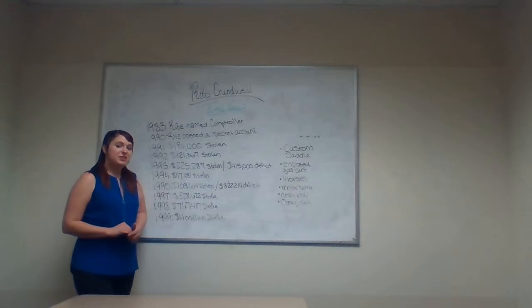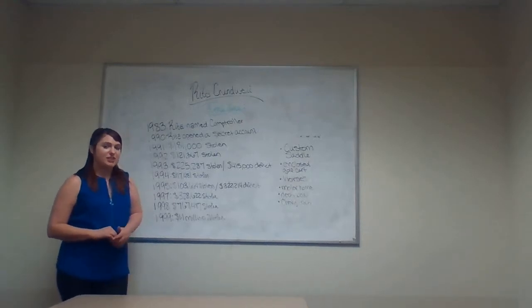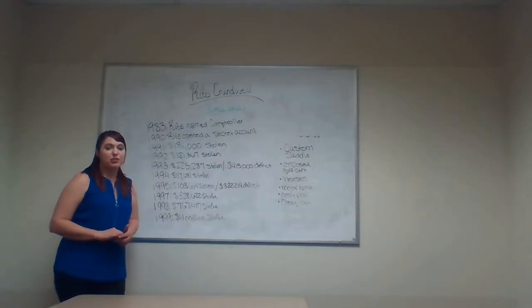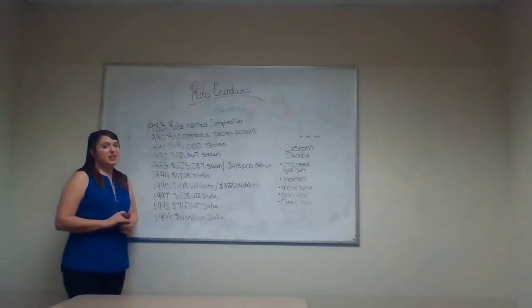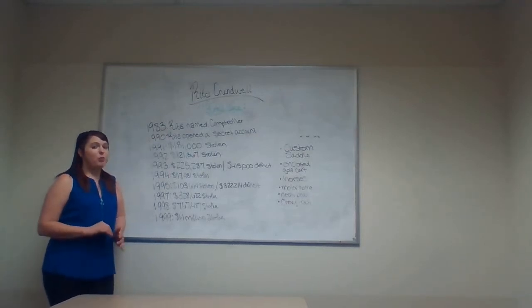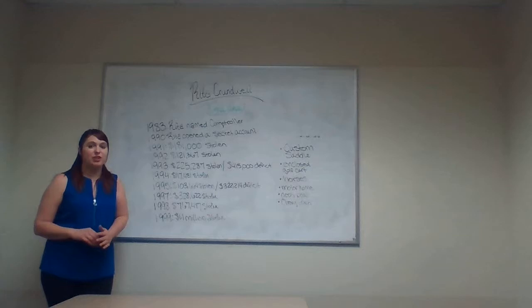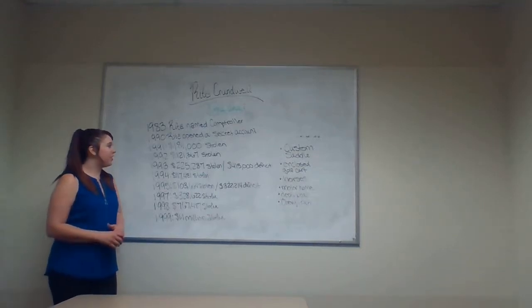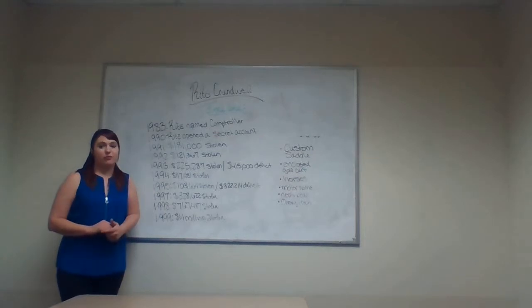While she was still in high school in the year 1970, she was hired by the City of Dixon Finances Office to work as a secretary as a work-study student. In 1983, Rita was named Comptroller and Treasurer for the City of Dixon. In 1990, Rita opened a secret bank account under the name of the City of Dixon. This is when her fraud first started.